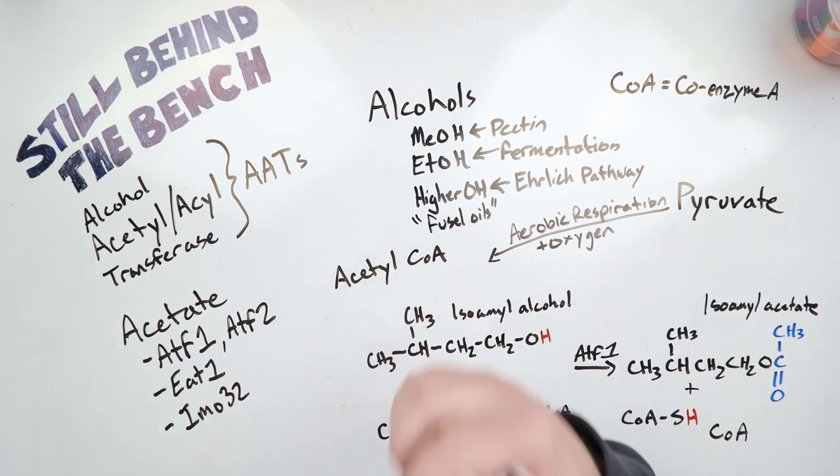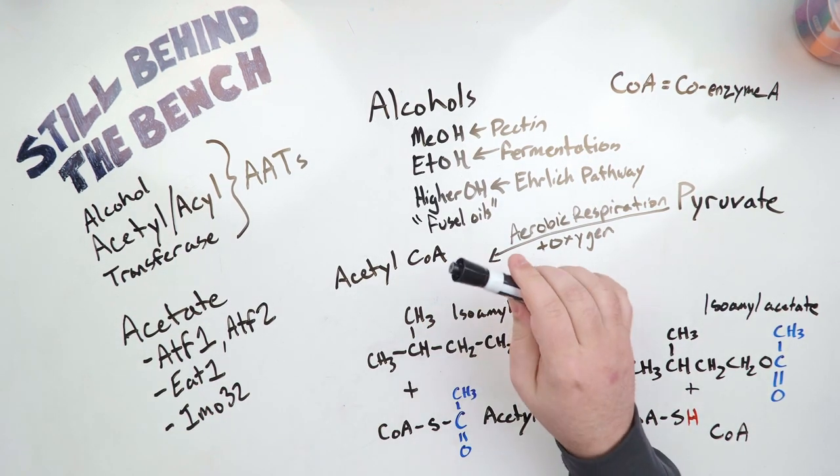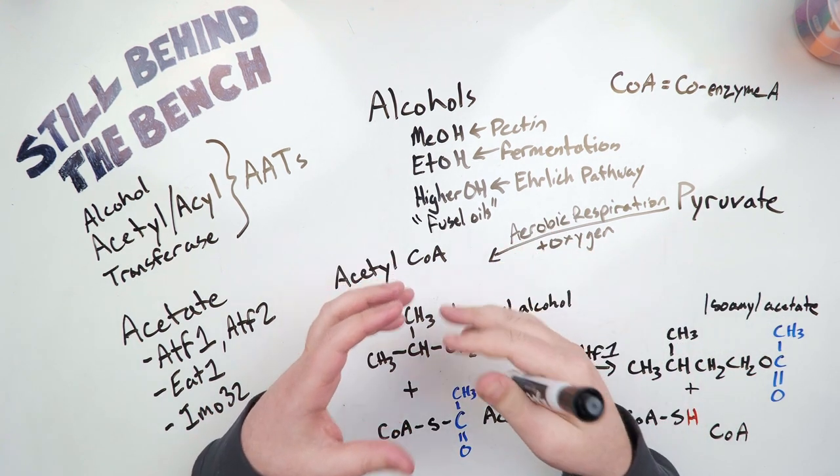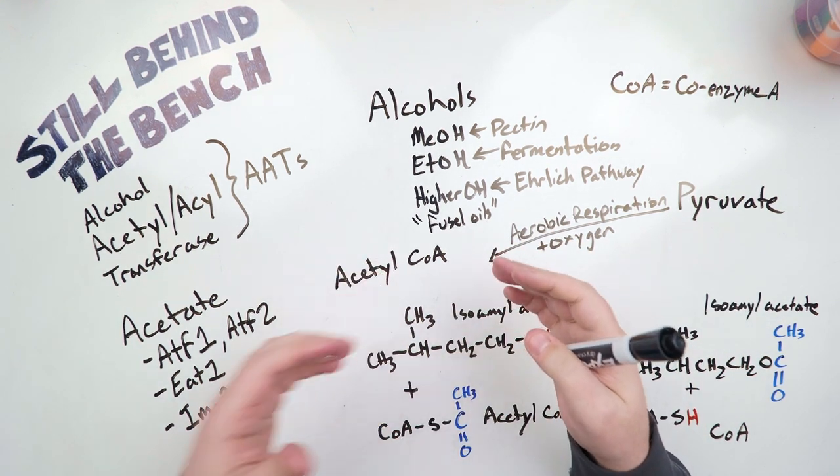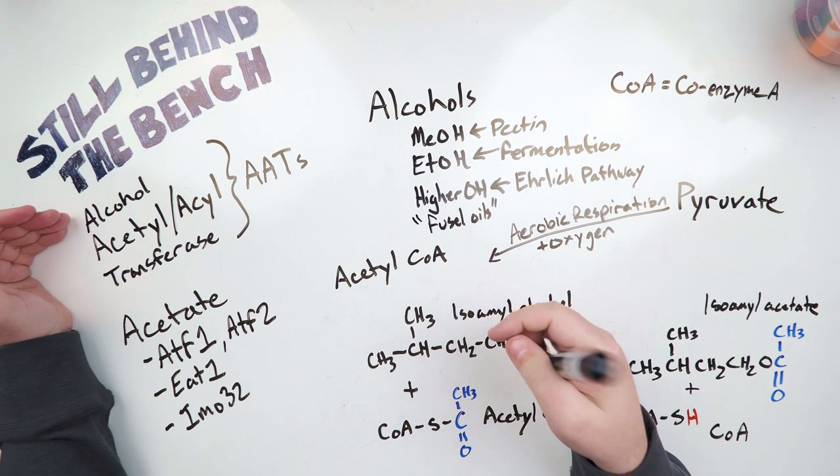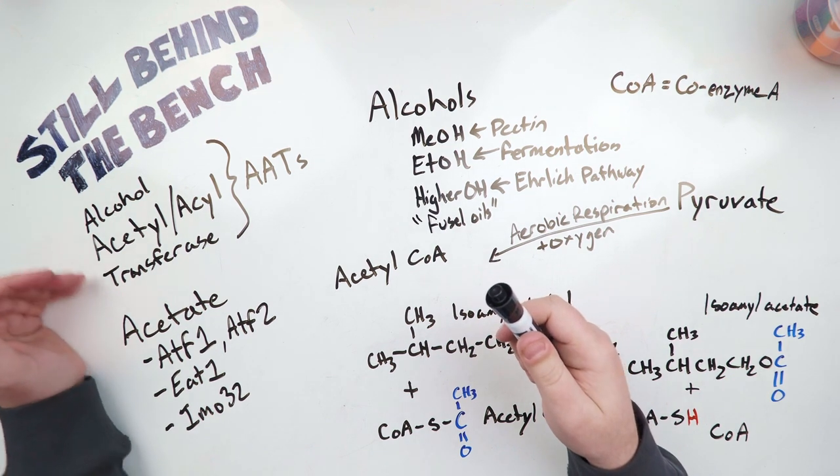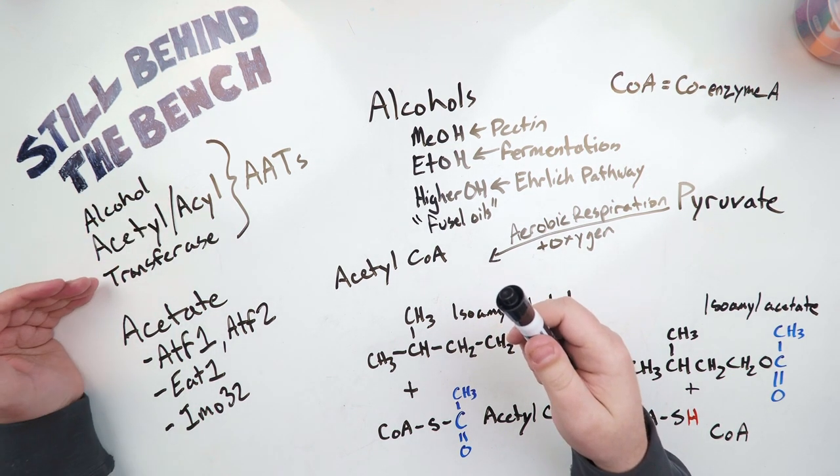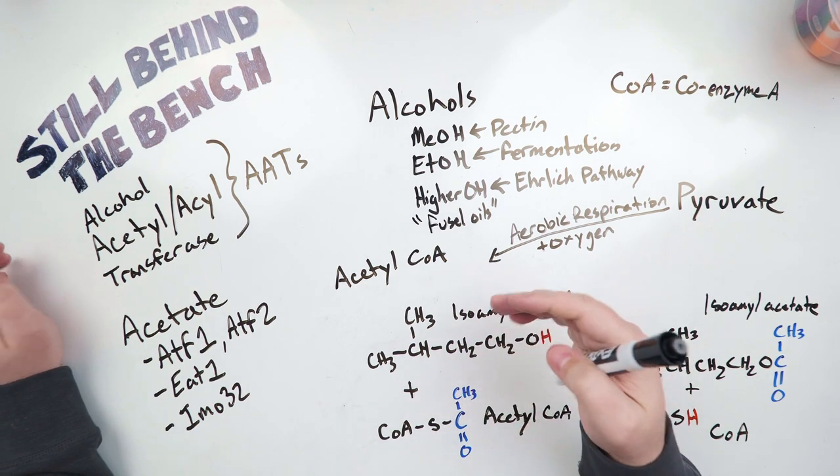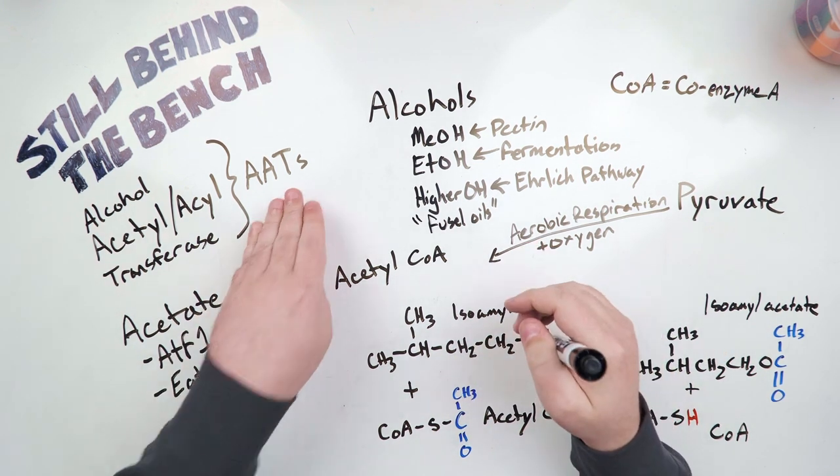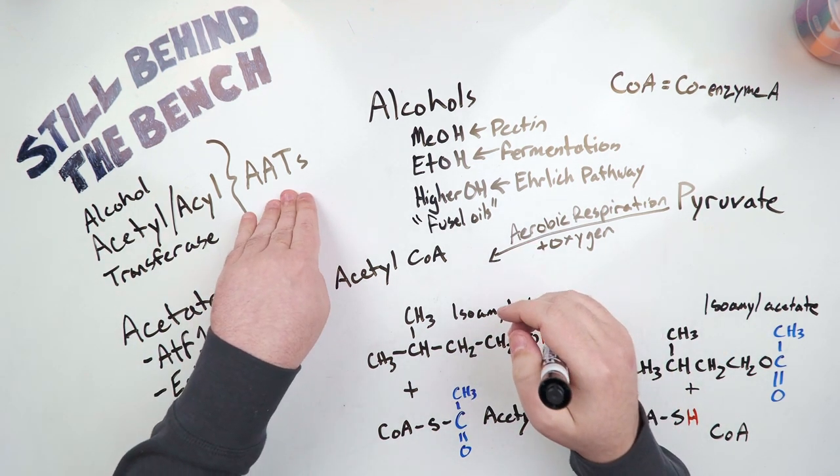Okay, so enzymatic ester synthesis can currently be broken down into multiple sets of enzymes. Generally, they're under a class of enzymes called AATs, which stands for alcohol acetyltransferase or alcohol acyltransferase, depending on specific coenzymes, which we're going to be talking about later.